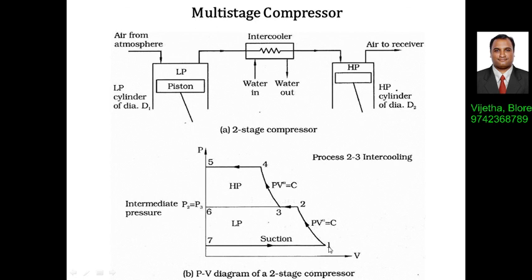The PV diagram shows that process 1 to 2 is the low-pressure polytropic compression work. Process 2 to 3 represents the intercooler stage, where pressure remains the same and the intercooling takes place. Then process 3 to 4 is the high-pressure compression work, after which the air goes to the intercooler and then to the air receiver tank.